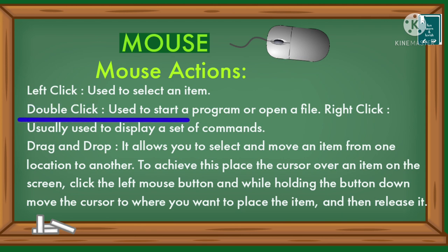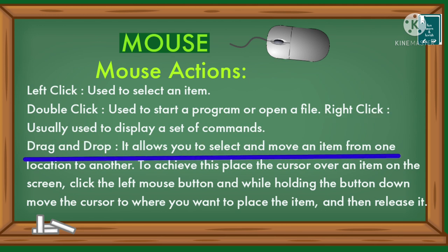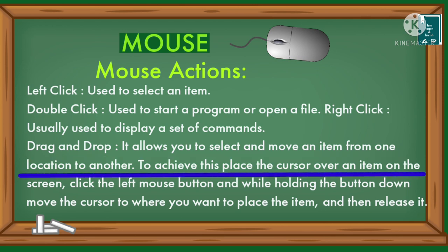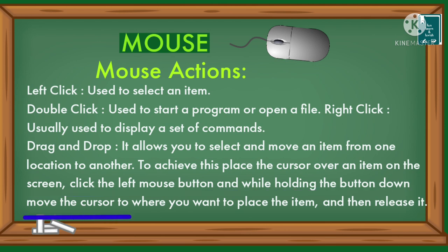Mouse actions: left click is used to select an item; double click is used to start a program or open a file; right click is usually used to display a set of commands.